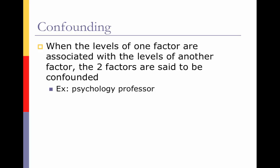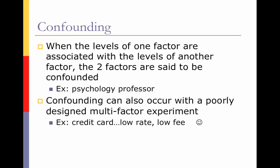A better way to do this would be to teach the same class in the same semester: one section with a monotone and the other more animatedly, so the semester won't affect the results. Confounding can also occur with a poorly designed multi-factor experiment. For example, a credit card company wanted to know if people are more likely to sign up for a card with a low rate or a low fee. They mailed one offer with a low rate and no fee, and another with a high rate and a high fee. Obviously more people signed up for the low rate with no fee. The problem is they didn't have enough treatment groups — they should have also offered a low rate with a high fee and a high rate with no fee to get more accurate results.